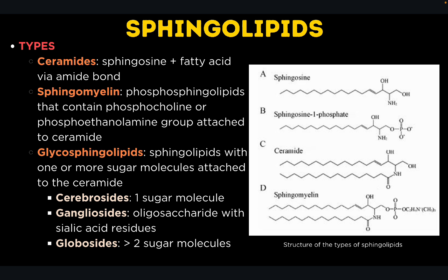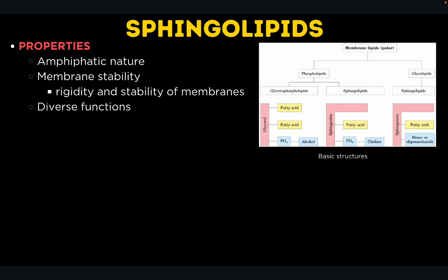Different types of glycosphingolipids include cerebrosides, which contain one single sugar molecule such as glucose or galactose. If an oligosaccharide is attached, you will have a ganglioside. If you have more than two sugar molecules, it is called a globoside. Globosides are involved in cell recognition and blood group antigens. For their properties, sphingolipids are amphipathic and contribute to membrane rigidity and stability. The head groups can attach to different molecules, giving sphingolipids diverse functions.